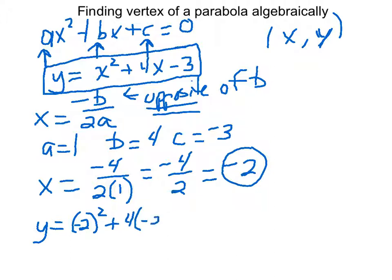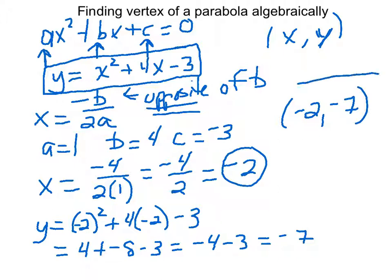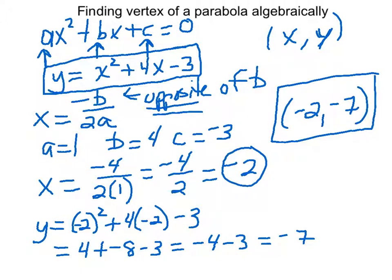Plus 4 times negative 2 minus 3. And now it's just order of operations. If you get real ugly numbers and your teacher's okay with it, just grab a calculator and run it through. Negative 2 times negative 2 is positive 4. 4 times negative 2 is negative 8. And we go from left to right and adding 4 plus negative 8 is negative 4. And then finally negative 4 minus 3 gives us negative 7. So there you go. We want to express our vertex, and we know that it happens when x is negative 2 and y is negative 7. That's how you get the vertex of a parabola.